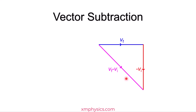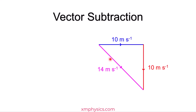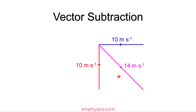This vector here — which is V_f plus negative V_i — turns out to be final velocity minus initial velocity. Bringing back the numbers, it was all 10 meters per second, so the change in velocity is 14 meters per second — just use Pythagoras — in the southeast direction.